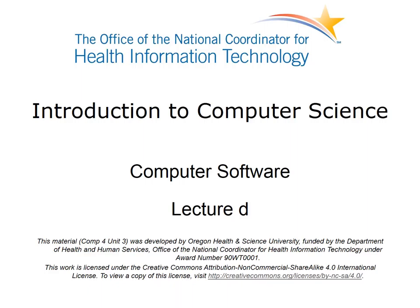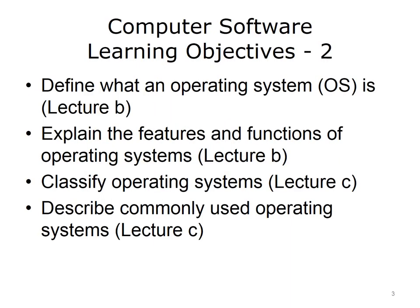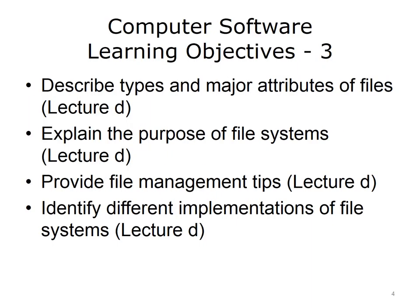The learning objectives for this unit, Computer Software, are to define computer software and major software types, describe application software classification and provide examples, including those focused on healthcare. Define what an operating system is, explain the features and functions of operating systems, classify operating systems, describe commonly used operating systems, describe types and major attributes of files, explain the purpose of file systems, provide file management tips, and identify different implementations of file systems.